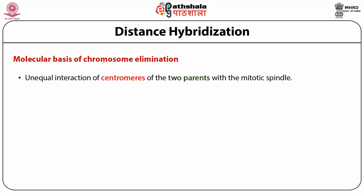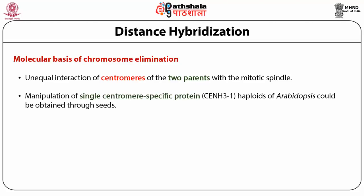Recently, there is a suggestion that genes associated with the centromere result in unequal reaction with the spindle fiber, causing loss of chromosomes. In the case of Arabidopsis thaliana, haploids have been obtained by manipulating this gene, called CENH3. By manipulating this gene, they could get haploids of Arabidopsis thaliana, and also diploids from a tetraploid plant by the same technique, meaning the chromosomes of one parent were eliminated in the process.